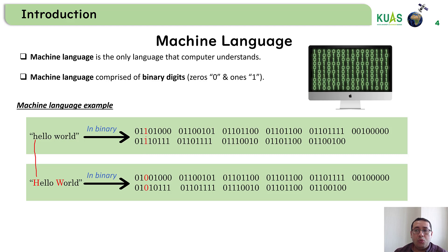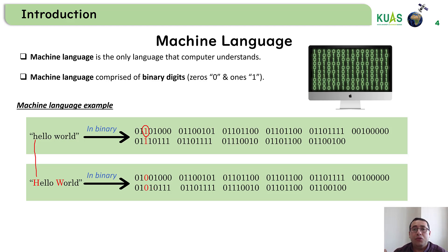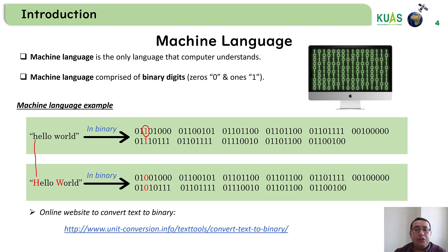The lowercase H is represented as 0,1,1,0,1,0,0,0, but in capital letter it becomes 0,1,0,0,1,0,0,0. So binary digits seem difficult for us as humans to understand. If you wish to try converting other names or words into binary digits, just visit the referenced website, write the normal word, and it will show in binary digits.